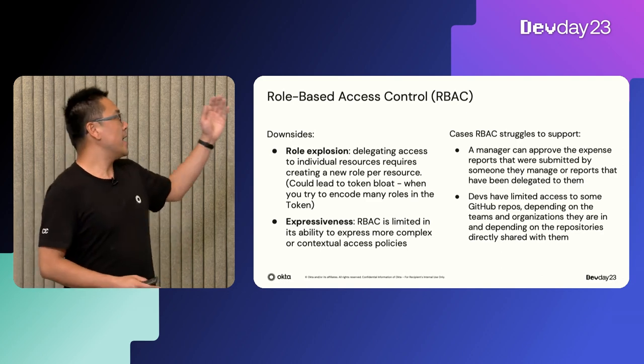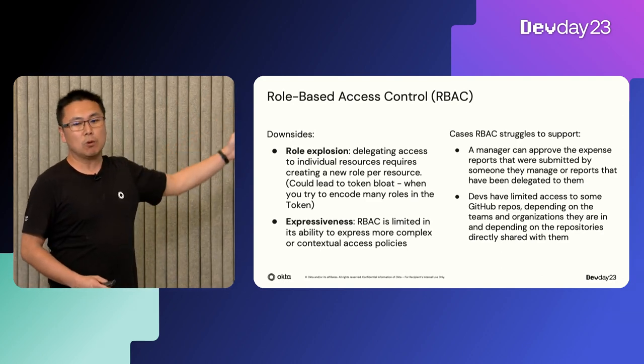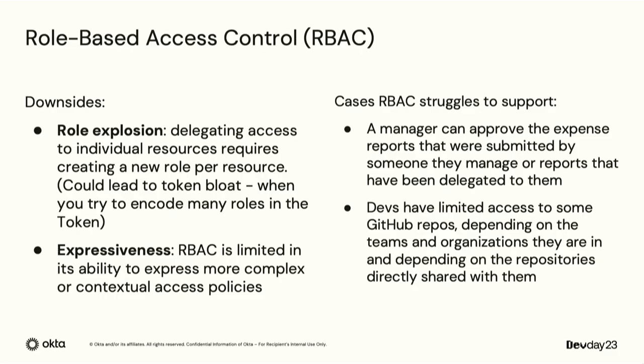But RBAC has the downside of role explosion. If you want to include all permissions in the token itself, the token can get very large, causing token bloat. Many proxies will block headers above a certain size, so a very large token will be blocked and authorization cannot proceed.